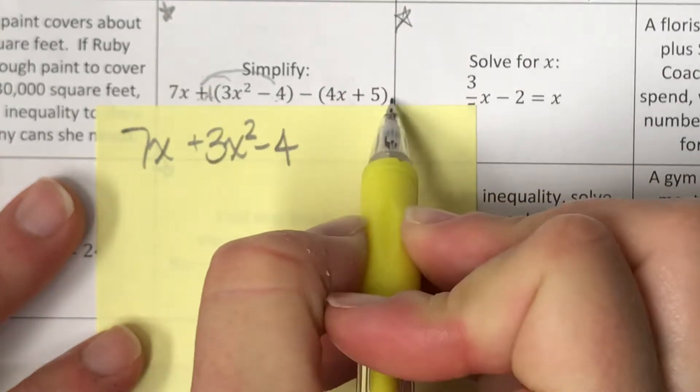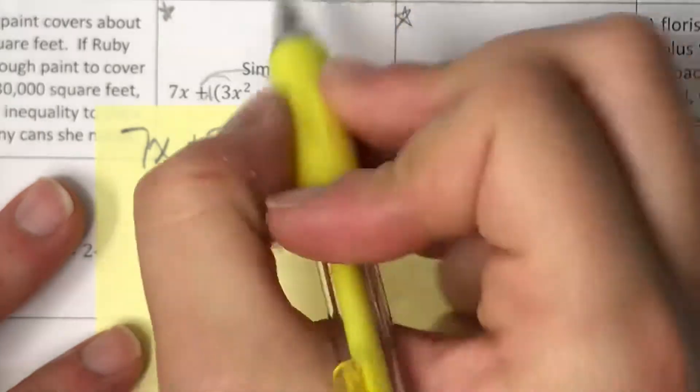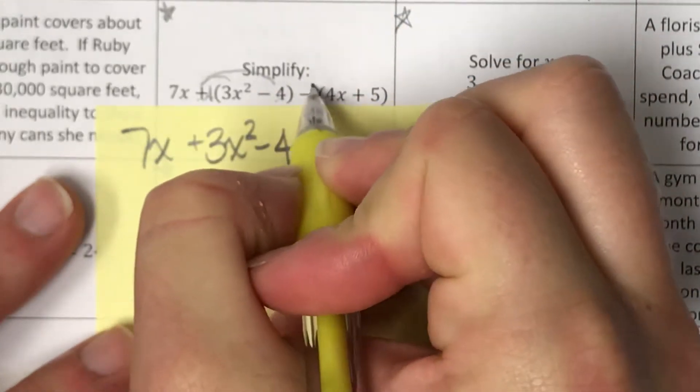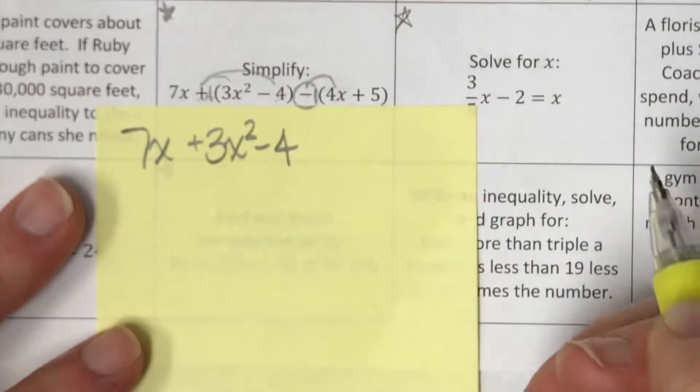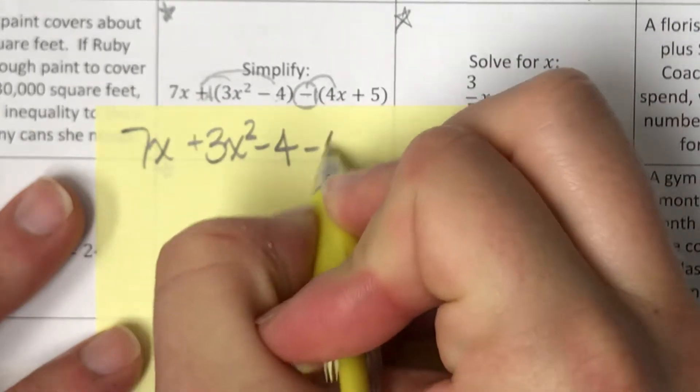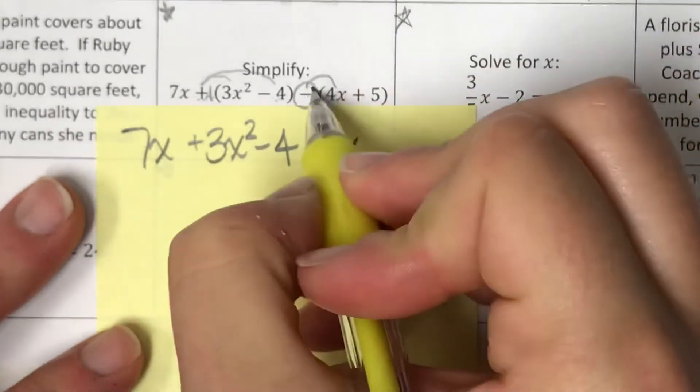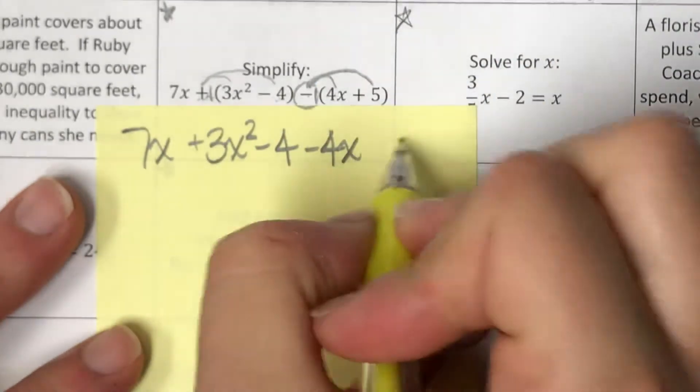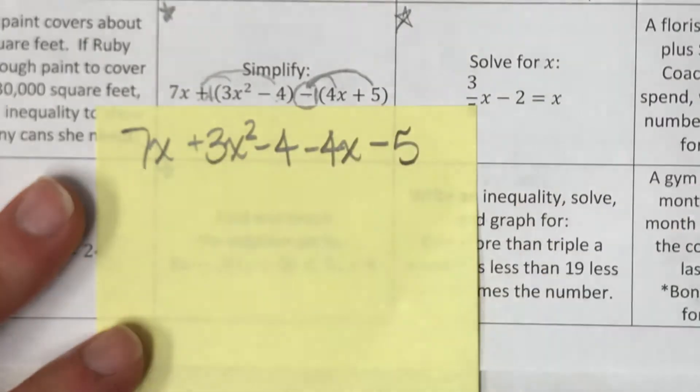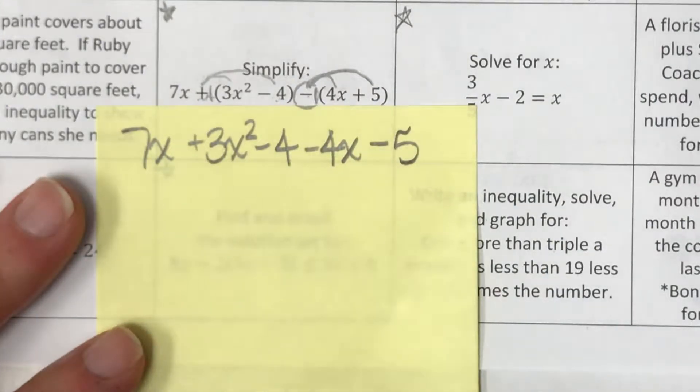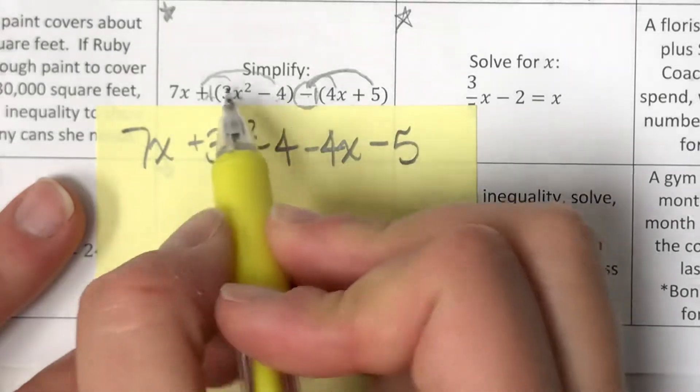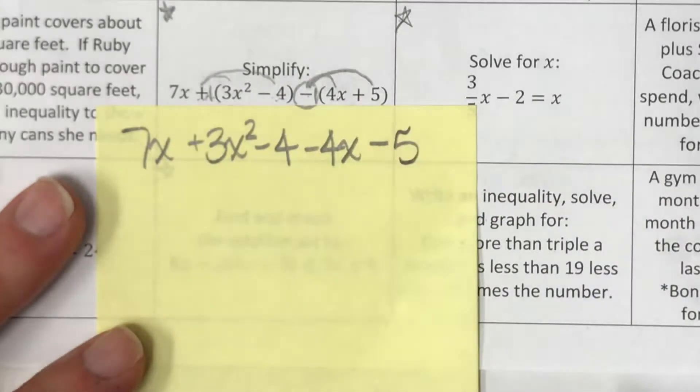This back thing, I've got distributive property also, but here I'm distributing a negative 1 right there. So negative 1 times 4x is negative 4x. Negative 1 times 5 turns that into a negative 5 as well. So it's just distributive property first. Distributed here, distributed here.